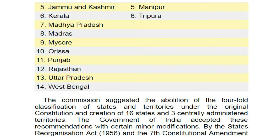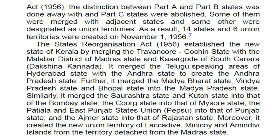The Commission suggested the abolition of the four-fold classification of states and territories under the original constitution and the creation of 16 states and three centrally administered territories. The government of India accepted these recommendations with certain minor modifications. By the States' Reorganization Act 1956 and the 7th Constitutional Amendment Act 1956, the distinction between Part A and Part B states was done away with and Part C states were abolished, some merged with adjacent states and some designated as union territories. As a result, 14 states and 6 union territories were created on 1st November 1956.